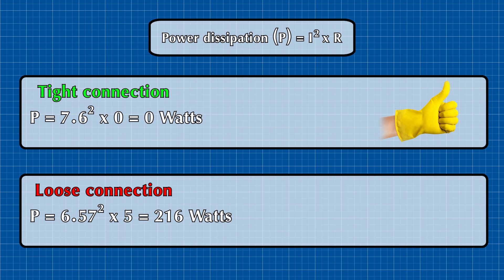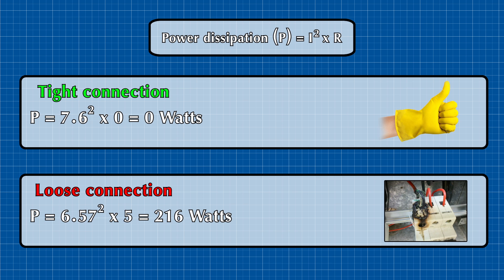But for loose connection, power equals 6.57 amps squared times 5 ohms, which equals approximately 216 watts. So it is a very huge amount of power being dissipated at a very small area of conductive material.